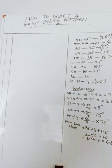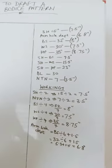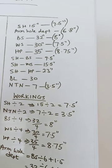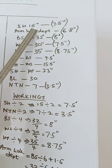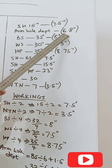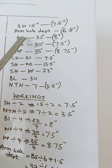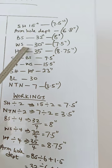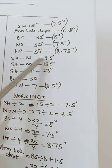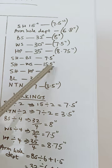So let's take a look at the measurements that we are working with. We are working with the shoulder of 15, armhole depth of 6.8 — I'll be explaining briefly how I got that. We're working with a bust of 32, the waist of 30, hip 35, shoulder to bust is 9.5, shoulder to waist is 15.5, shoulder to hip is 23 inches.